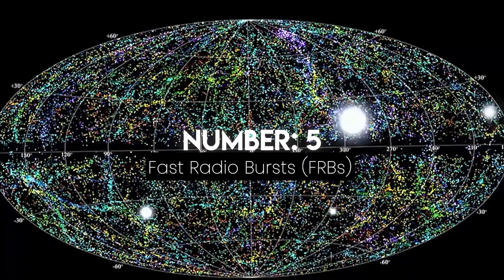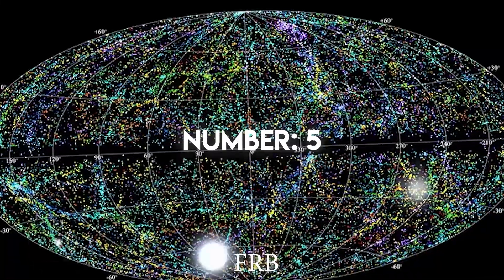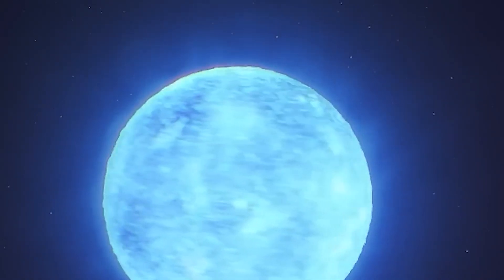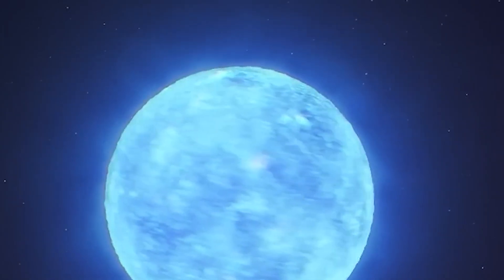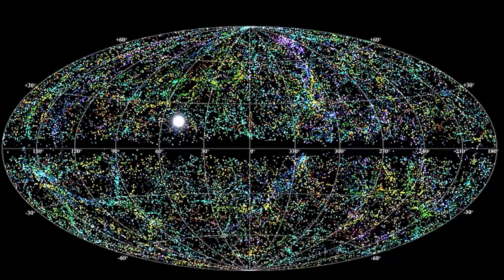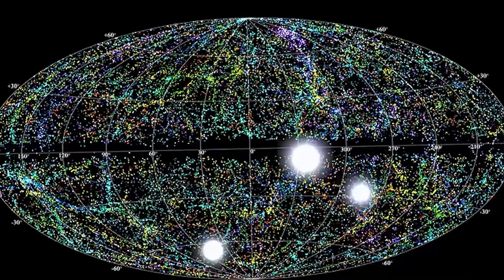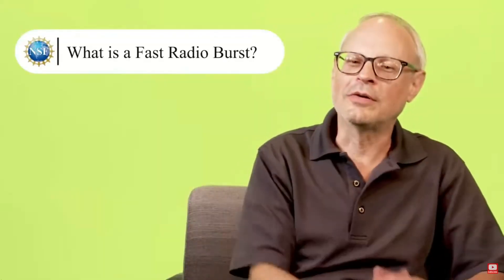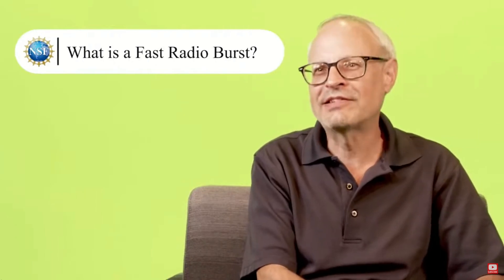Number 5: Fast radio bursts, FRBs. In 2007, a telescope in Australia caught a millisecond-long radio pulse that unleashed as much energy as 500 million suns. The source? It came from billions of light-years away and no one knew what caused it. We called it the first fast radio burst, FRB. Since then, astronomers have detected hundreds more.